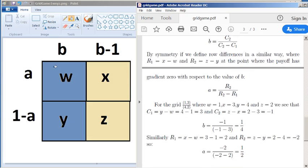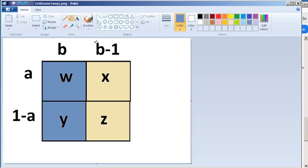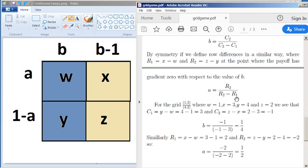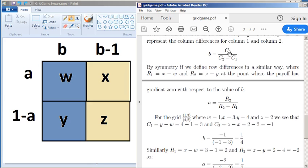And then, because everything about this game is symmetrical, remember this b minus 1 is supposed to be 1 minus b, so it is symmetrical. We can actually do the same but go the other way, and make r1 the row difference for the first row, which would be x minus w, and r2 the row difference for the second row, which would be z minus y. And if we do that, we should get exactly the same structure for the formula.